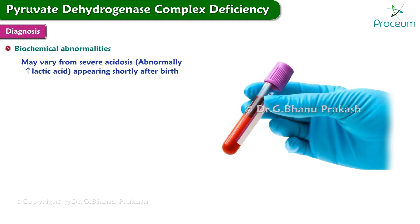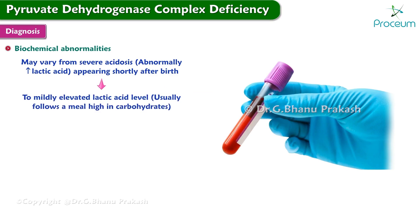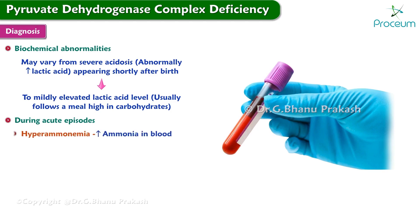Let's now move on to the diagnosis of PDCD. Biochemical abnormalities may vary from severe acidosis due to abnormally high levels of lactic acid appearing shortly after birth, to a mildly elevated level which usually follows a meal high in carbohydrates. In some patients, the elevation of blood lactate levels is seen only during acute episodes, and they may also have high levels of ammonia in the blood, known as hyperammonemia.